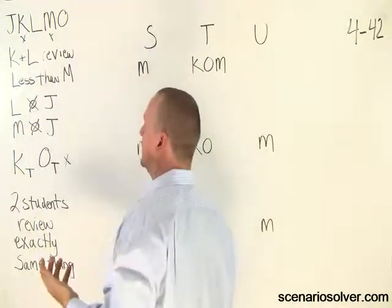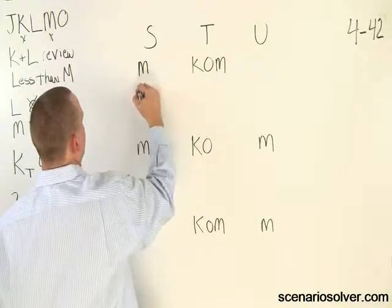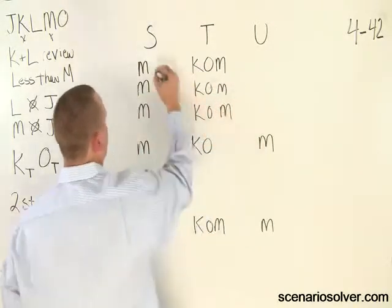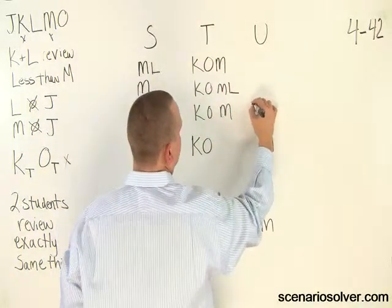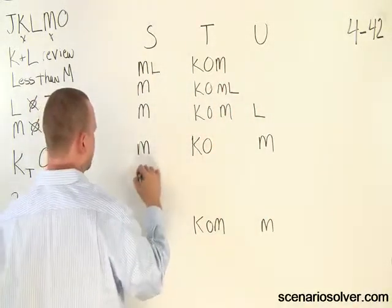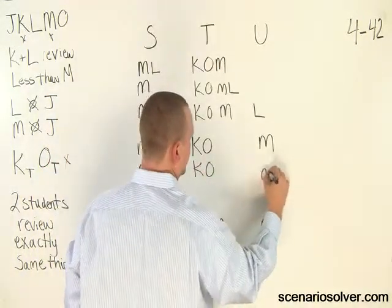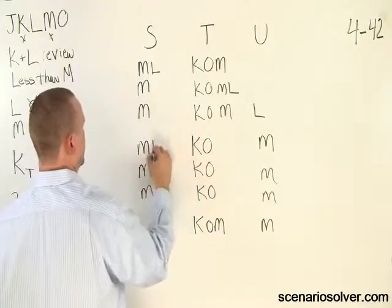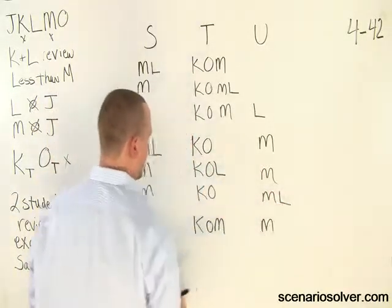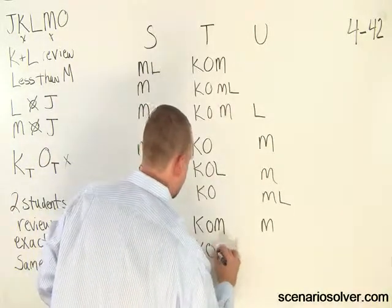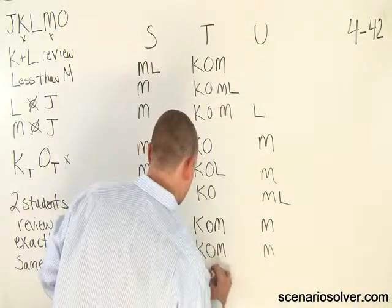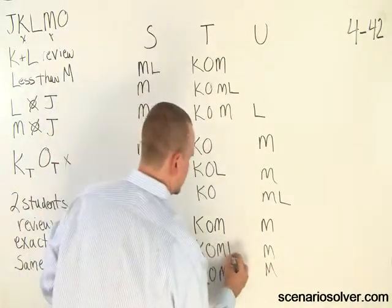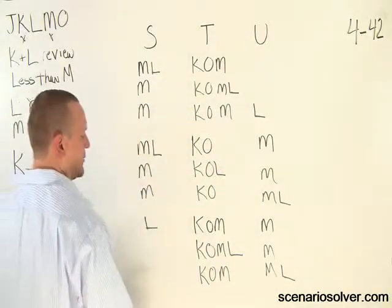Let's finish up with L. We now know that L can only go once, so I'll just copy two more of these and place L. L can go across. And that's the entirety of what L can do, so L is now completed.